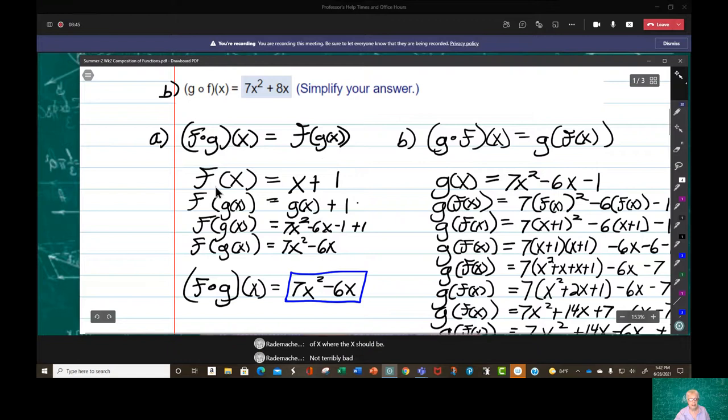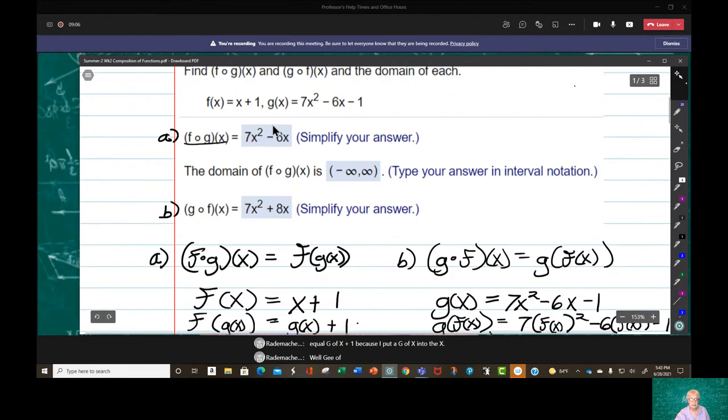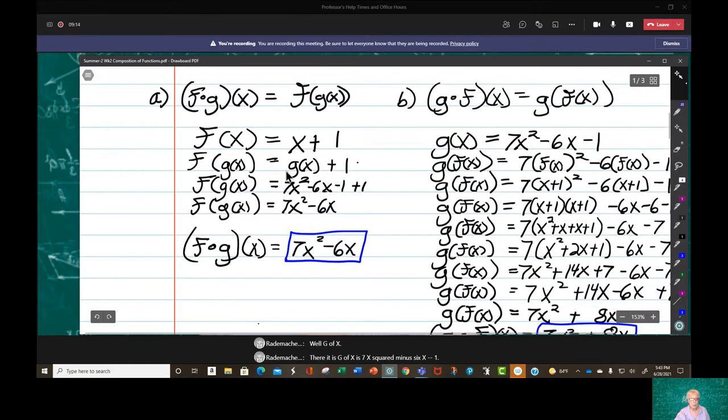Not terribly bad. If f of x equals x plus 1, then f of g of x is going to equal g of x plus 1 because I put a g of x into the x. Well, g of x, there it is, g of x is 7x squared minus 6x minus 1. So we're going to have g of x plus 1. So we'll have 7x squared minus 6x minus 1 and then the plus 1, which will give us 7x squared minus 6x because the negative 1 plus 1 zeros out. So f circle g of x equals 7x squared minus 6x and this is what you would write in the answer box.